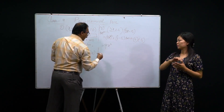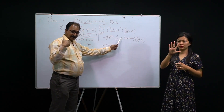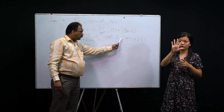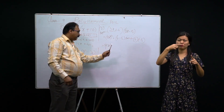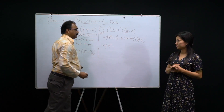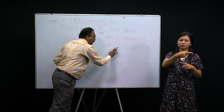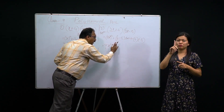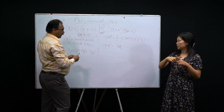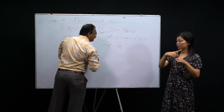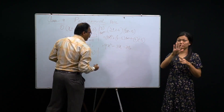Then 4 minus 5: different signs, so we subtract, and the bigger number's sign comes to the answer — so minus comes. That outside plus multiplied by minus gives minus. Then 5 minus 4 is 1, so 1×3x = 3x. Plus into minus gives minus, and 4×5 = 20. This is the way you get these answers — product using the same formula.